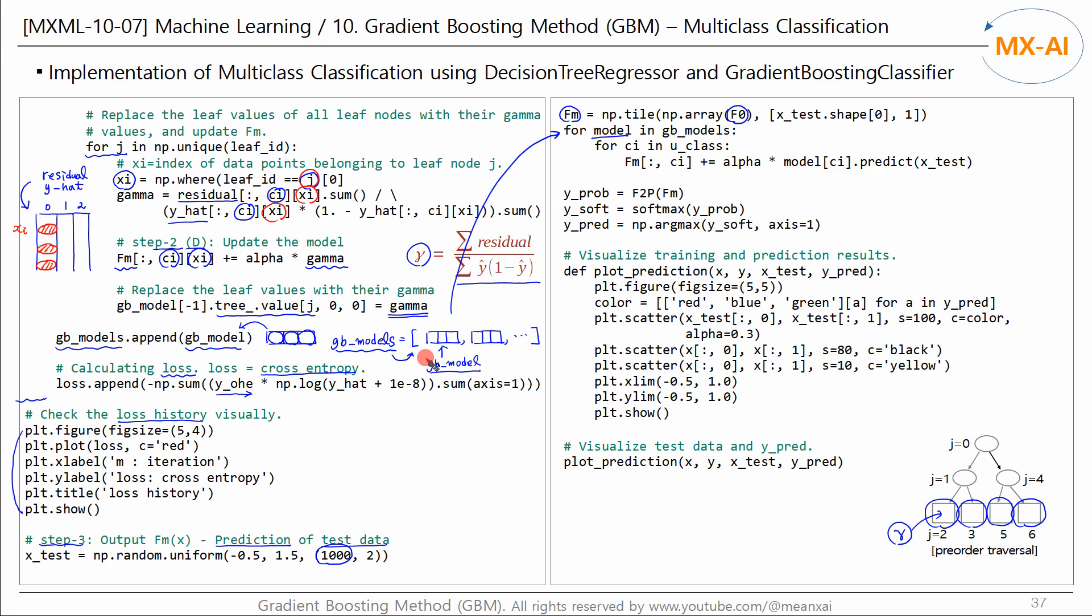And then we read the models one by one from the GB models list. This model has as many trees as the number of classes. We get these trees one by one. We then input test data into each tree to estimate the gamma. The gamma, which is the leaf value stored in the leaf node during the training stage, is output. Multiply this by the learning rate to get the log odds fm value. At the end of the iteration, we use the logistic function to convert log odds fm to a probability value. Next, we convert this to a softmax probability.